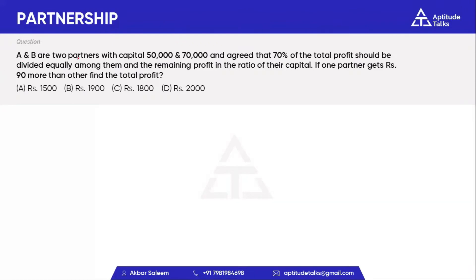A and B are 2 partners with a capital of 50,000 and 70,000. They agreed that 70% of the total profit should be divided equally among them, and the remaining profit should be divided in the ratio of their capital. If one partner gets 90 rupees more, find the total profit.